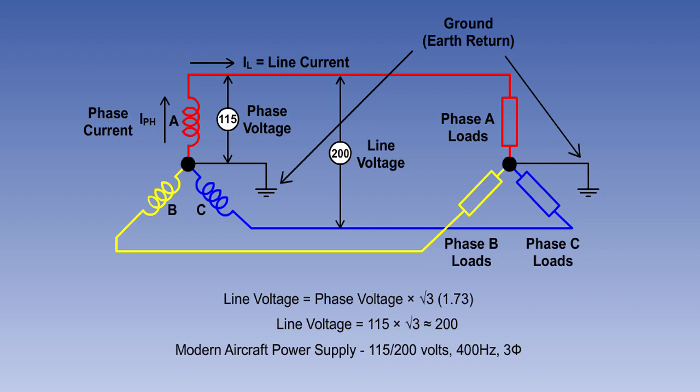the current flowing in the lines will be the same as the current flowing in the phase windings. Thus line current equals phase current.